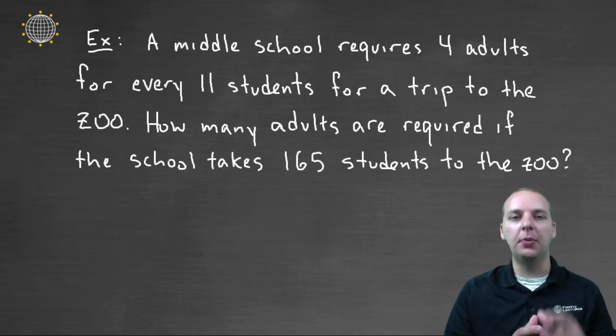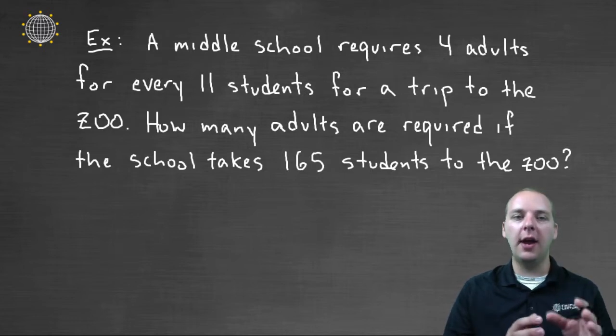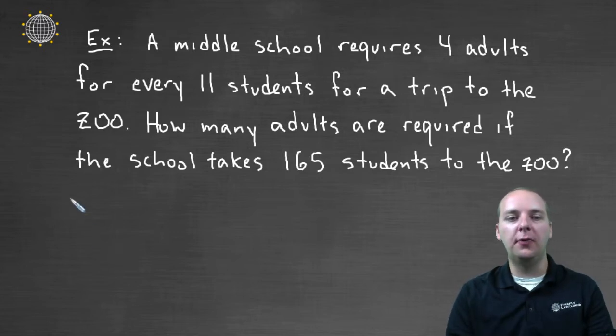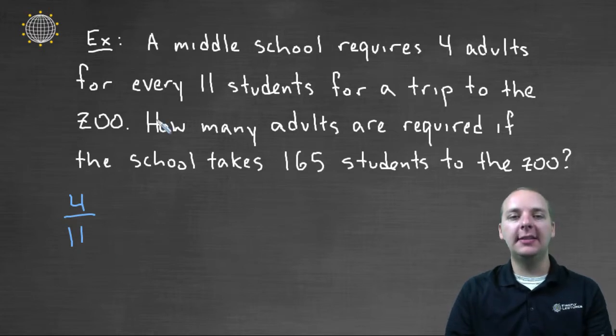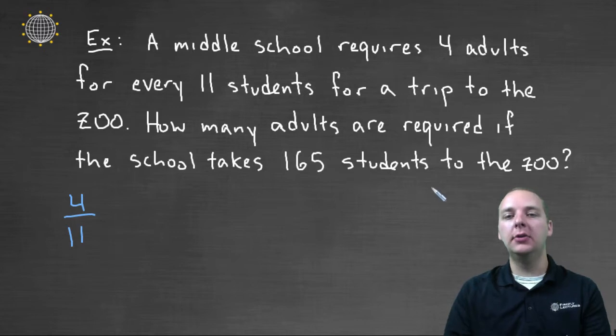So let's take a look at this example. Here it says a middle school requires four adults for every eleven students for a field trip to the zoo. So we could write that as a ratio, four to eleven. And that ratio is maintained - eight adults would be required for twenty-two students. And then they say how many adults are required if the school takes a total of one hundred and sixty-five students to the zoo.